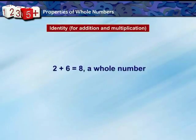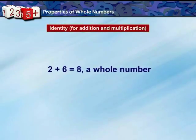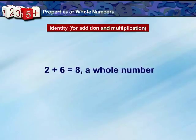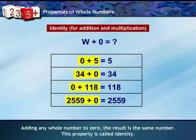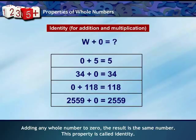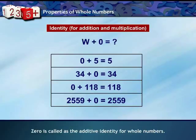When we add any two whole numbers, we get a new whole number. But what if we add 0 to any whole number? Observing the table, we see that adding any whole number to 0 gives the same number. This property is called the identity property, and therefore 0 is called the additive identity for whole numbers.